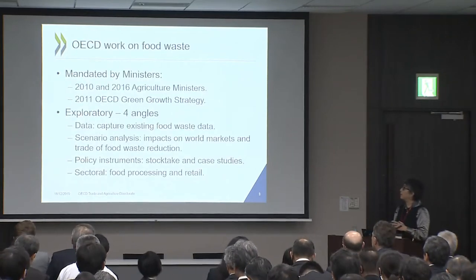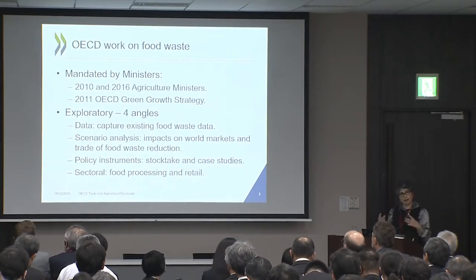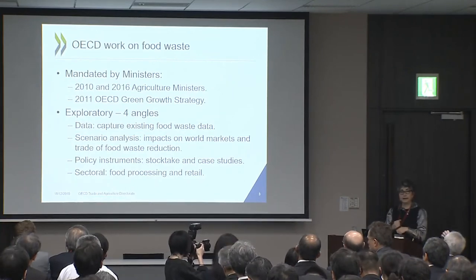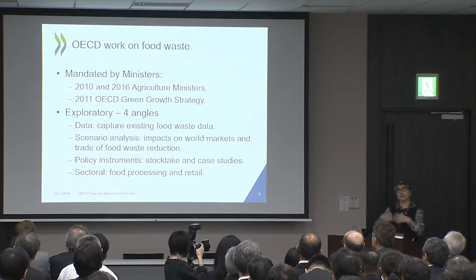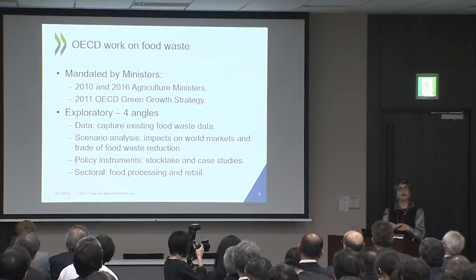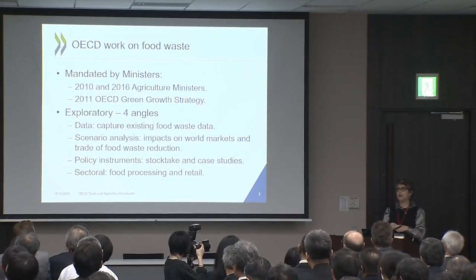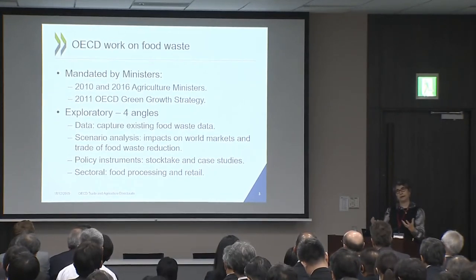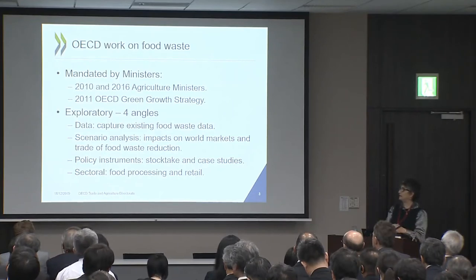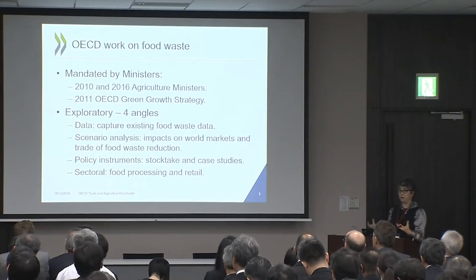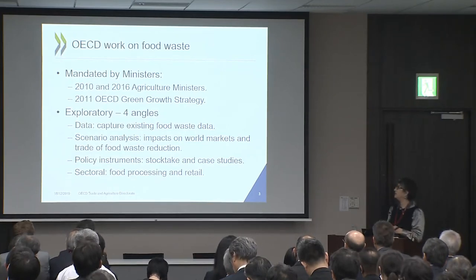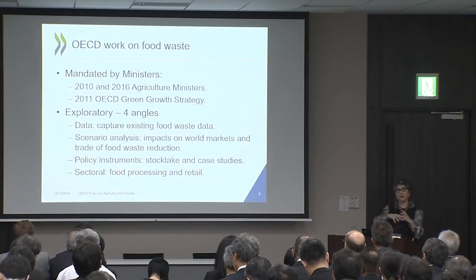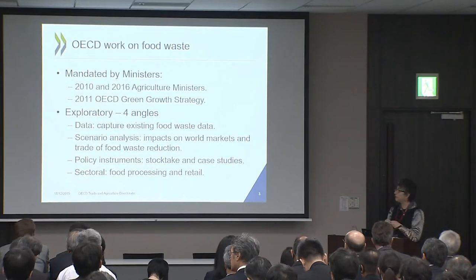Our work on food loss and waste was mandated by OECD member ministers in 2010, following the dramatic announcement by the FAO that 30% of food was either lost or wasted — a number we're not sure about, but which had the value of creating an impact. In 2016, when ministers met again, food loss and waste was confirmed as an important issue, and it was incorporated into the OECD green growth strategy, led more by our environmental colleagues.